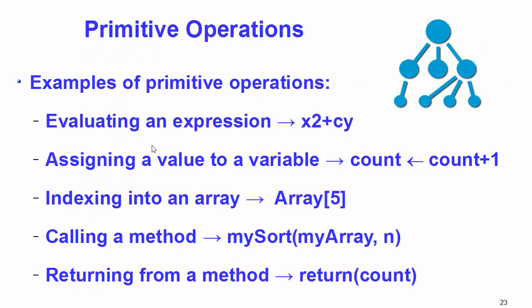Examples of primitive operations include evaluating an expression like one where X, Y, and C are known. Another example is assigning a value to a variable — for instance, defining a variable called 'count' and incrementing it by 1. To increment, we add 1 to it and then reassign that value back to 'count'. Assigning a value to a variable is considered a basic or primitive operation.